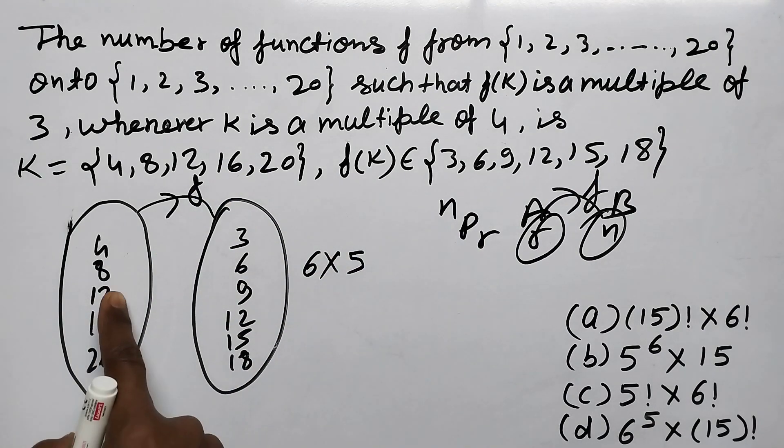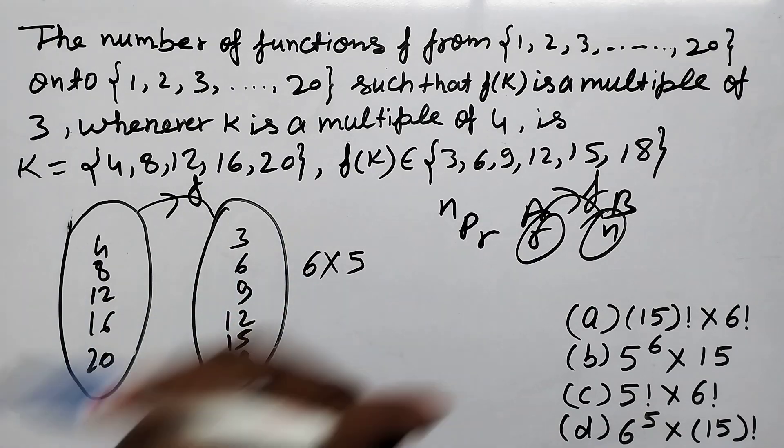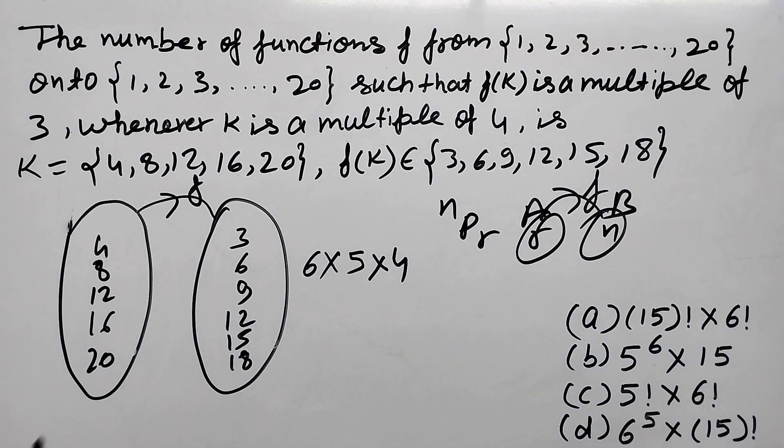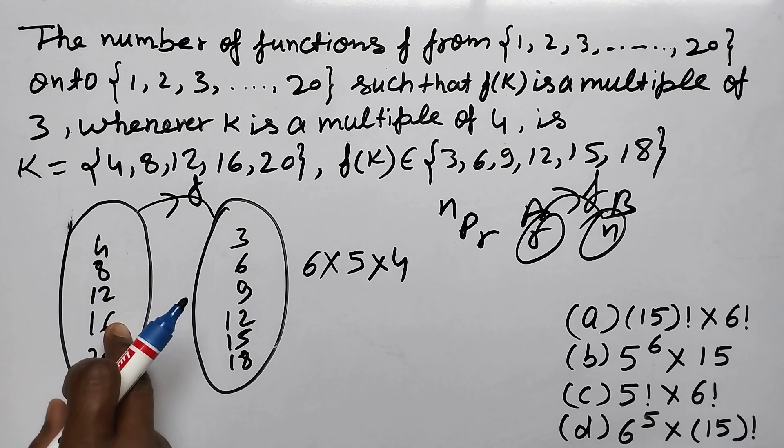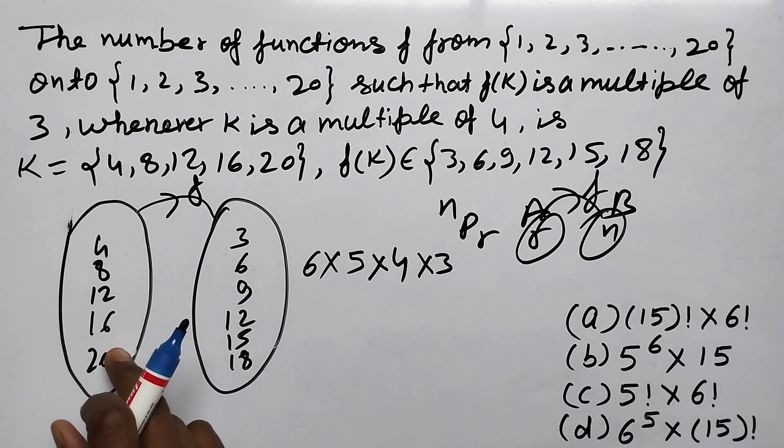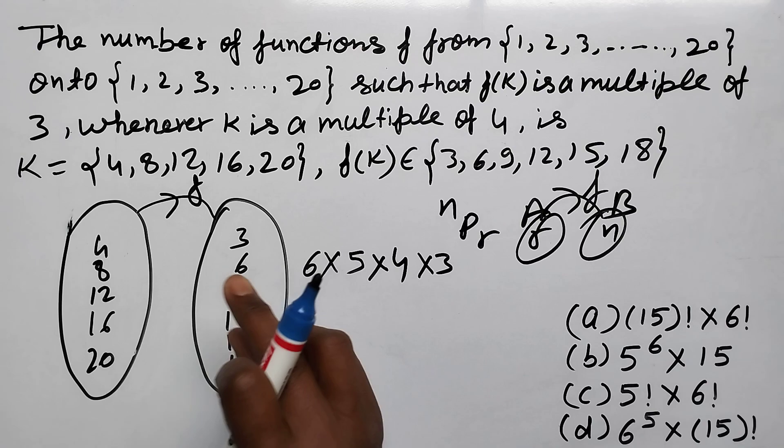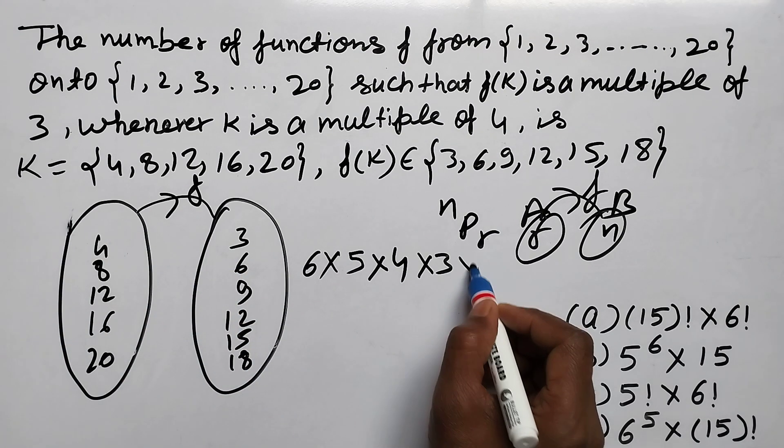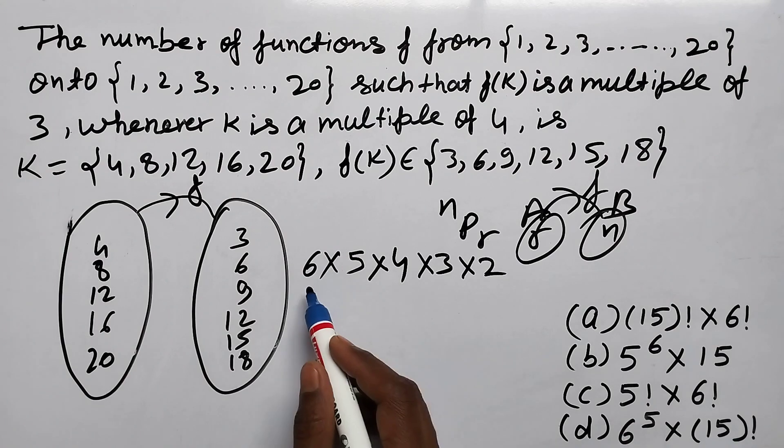12's - one of 4, in 4 ways. 16's - one of 3, in 3 ways. And 20's - one of 2, in 2 ways. Like this?